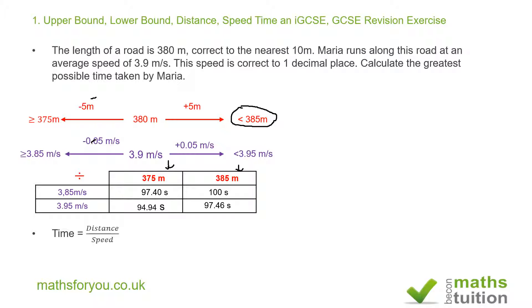These values range from 94.94 seconds at the minimum to 100 seconds at the maximum. So the greatest possible time for Maria to run this distance is 100 seconds. Thank you for watching — please subscribe and hopefully see you again sometime. Bye!